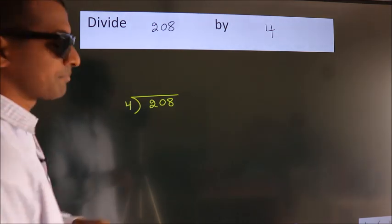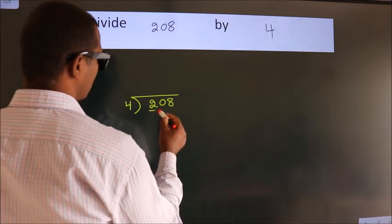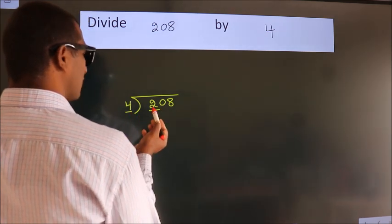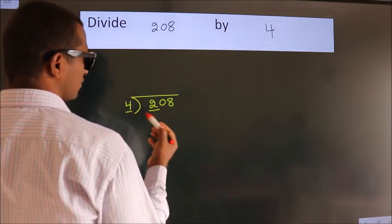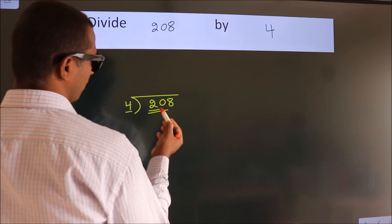Next, here we have 2. Here 4. 2 is smaller than 4, so we should take 2 numbers: 20.